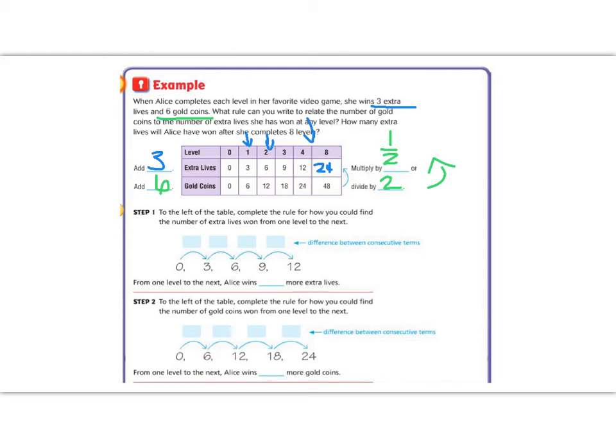So let's compare these together. Step one says we're going to show what we did on the first row. So we had zero to three, so we added three. Every level she passed, we added three. So for the next level, Alice is going to win three more lives. Now, for the number of coins she has, we said that was plus six. So each time she passes a level, she gets six more. So from one level to the next, Alice wins six gold coins. Make sure you have all this written down, because we're going to continue to step three and four.